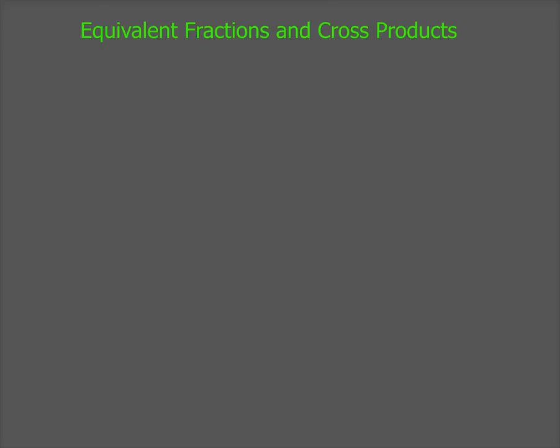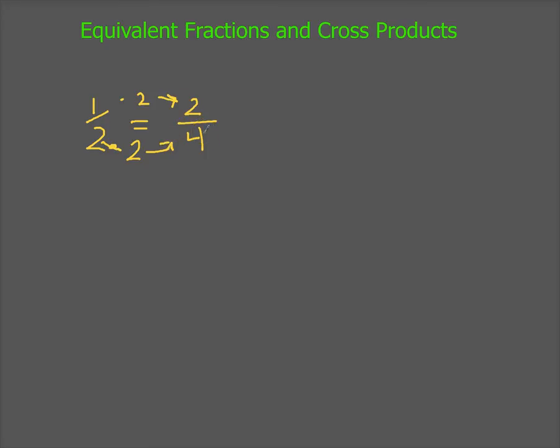And if I'm looking at it from a different perspective, if I look at numerators as they go to numerators and denominators as they go to denominators, or vice versa, going from the smaller to the larger, one times two gives me two, and two times two gives me four. So as you can see, they are equivalent. It's just one is a more simplified version of the other. So that's how an equivalent fraction works.